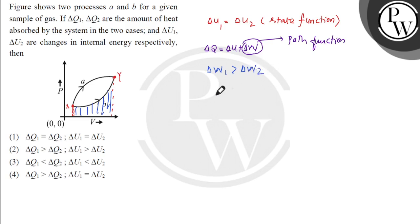This means ΔQ1 will equal ΔU1 plus ΔW1, and ΔQ2 will equal ΔU2 plus ΔW2. So when W1 is greater, Q1 will be greater. This means ΔQ1 will be greater than ΔQ2.